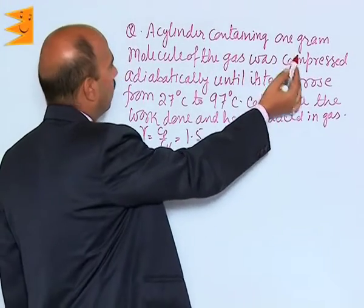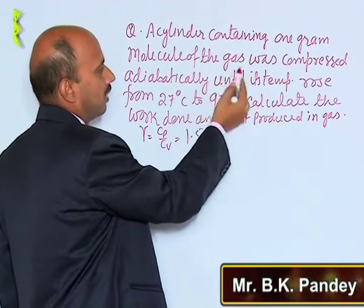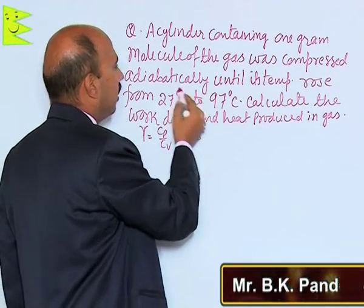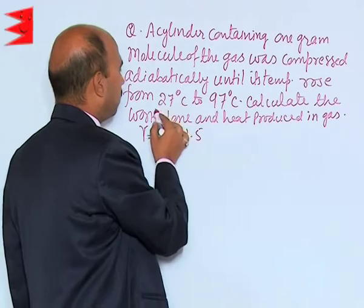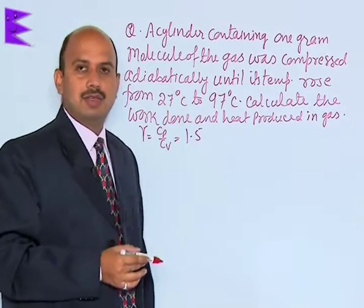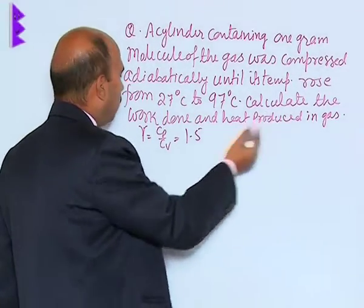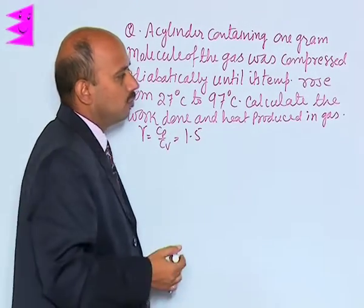Now, see a cylinder containing one gram molecule of the gas was compressed adiabatically until its temperature rose from 27 degrees Celsius to 97 degrees Celsius. Calculate the work done and heat produced in gas.